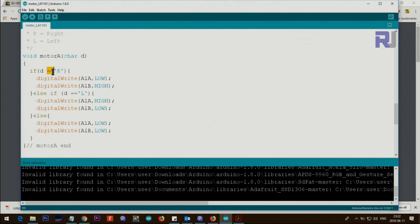We have a character D that is the letter R or L. We check if D is equal, these two equals means comparison. So we are comparing if D is equal capital R. If that is right, we say A1A is low and then the other one is high.